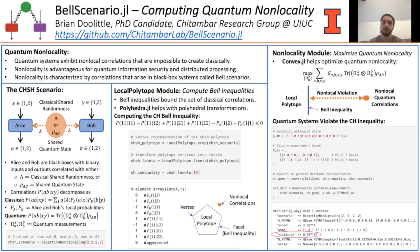In the third column, we use the nonlocality module to maximize quantum nonlocality with respect to the CH inequality. This amounts to solving a conic optimization program with the help of convex.jl. The main idea here is that we search for quantum measurements that maximize the distance from the local polytope boundary.